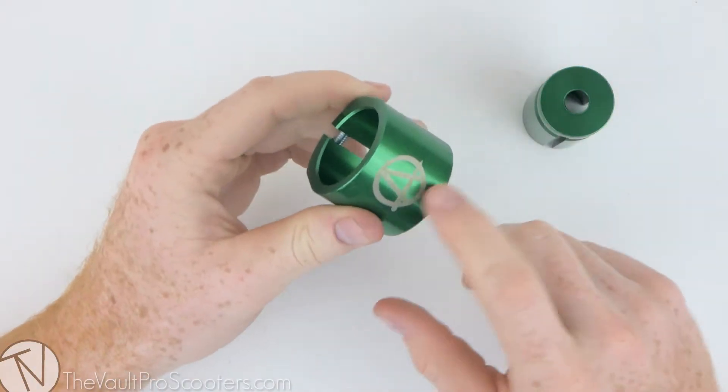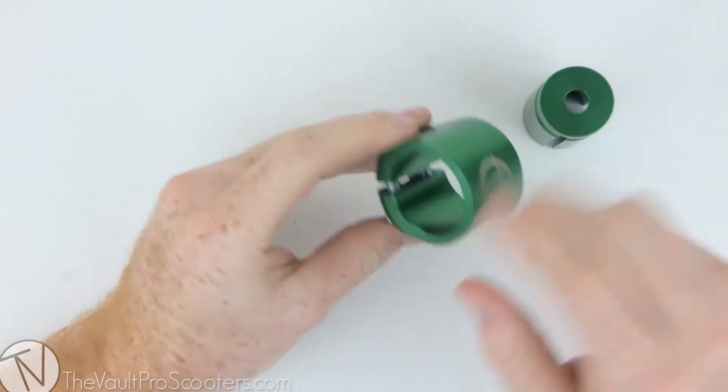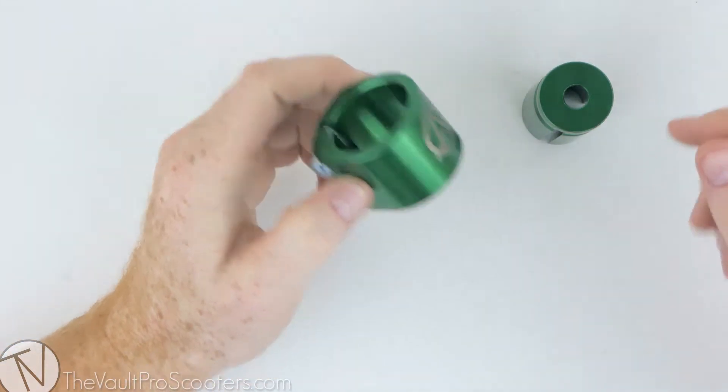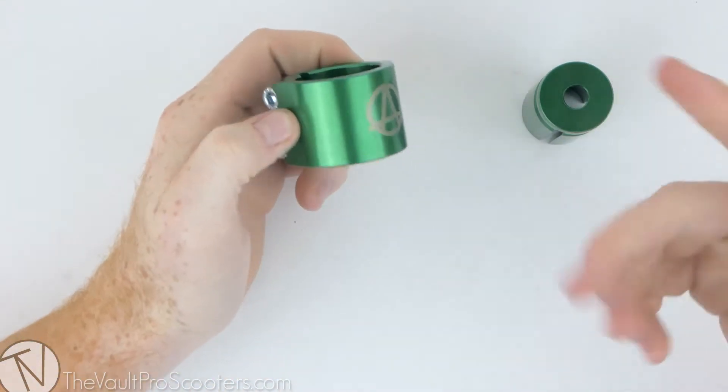As you can see, it does come with an oversized clamp as well. So if you're running complete IHC and you want to get oversized bars, all you need is this and you'll get the clamp and shim you need.